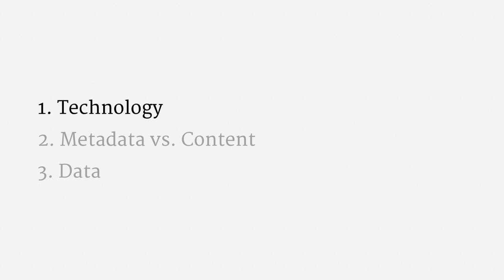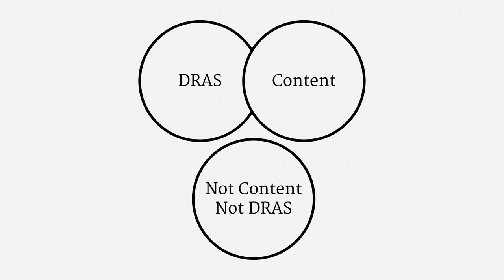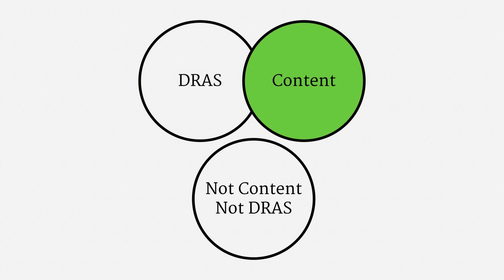Alright, so there's a somewhat simplified overview of how web browsing technology works. Now let's match that technology against surveillance law, and in particular, the distinction between metadata and content. Recall that prospective collection has three categories. First, dialing, routing, addressing, and signaling — or DRAS. Second, content. And third, information that isn't content, but also isn't DRAS. Recall that DRAS can be accessed with a mere pen trap order, issued on just a self-certification of relevance. Content, by contrast, requires a wiretap order.